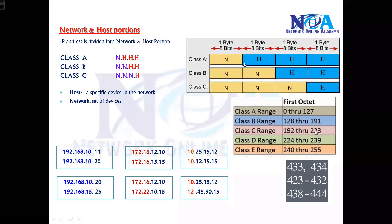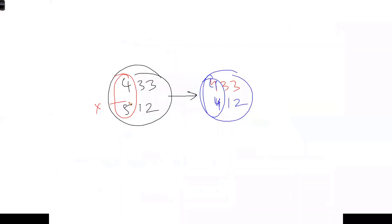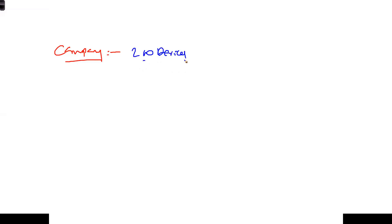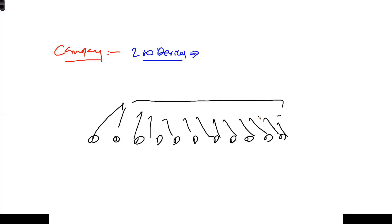In the previous topic, we covered network portions. In A class, one portion has to be the same; in B class, two network portions have to be the same; and in C class, three network portions have to be the same. Let's take an example — say you are working for a company or designing a network with around 200 devices, and the physical connectivity is all done, with devices connected through a switch.